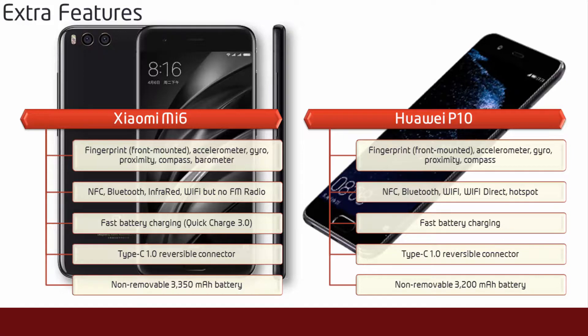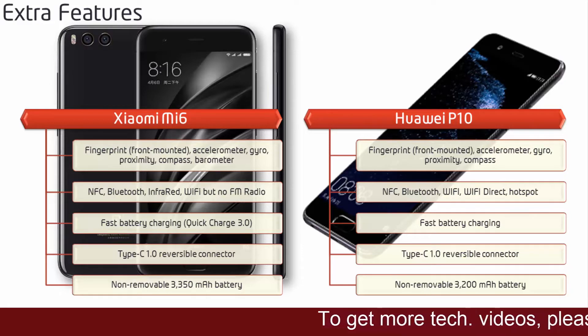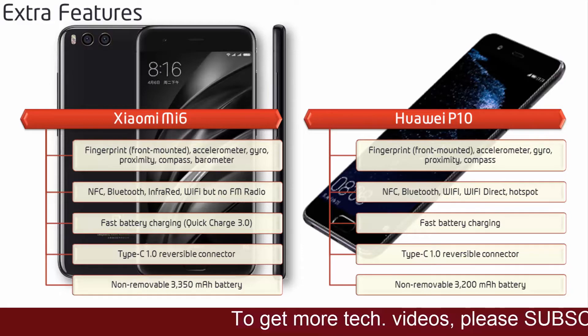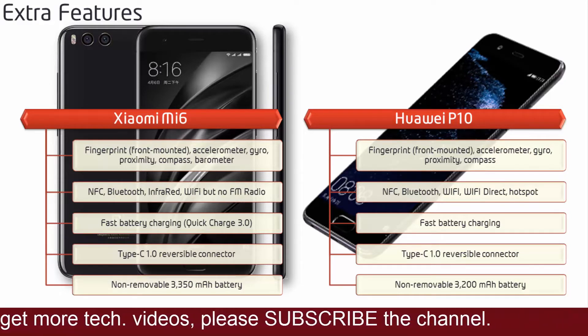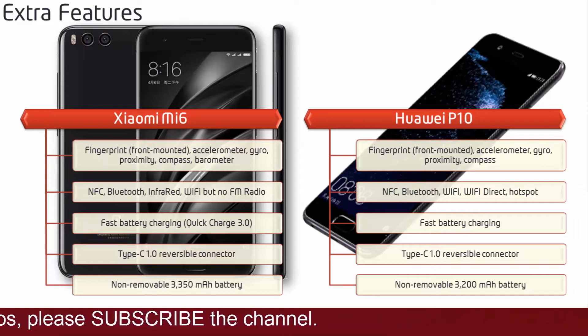Whereas there is a fingerprint scanner in the Huawei P10 and it is placed on the front side of the phone. It has accelerometer, gyro, compass, proximity barometer, HTML5 with no Java support. The P10 is also having a Type-C reversible connector with fast battery charging option. Friends, in the P10 you will get a 3200mAh battery as well.